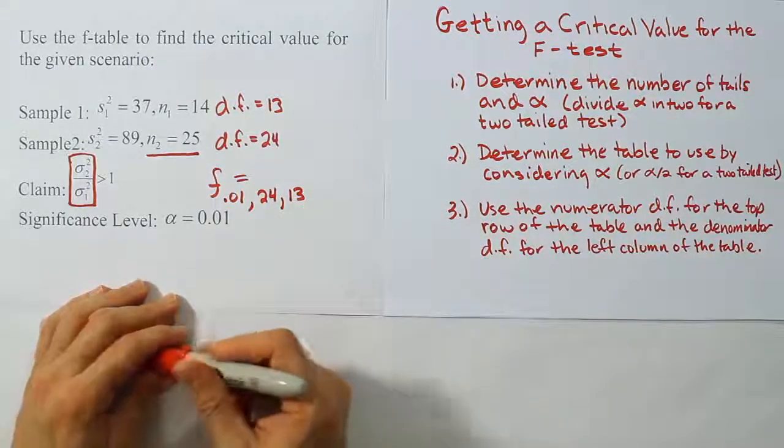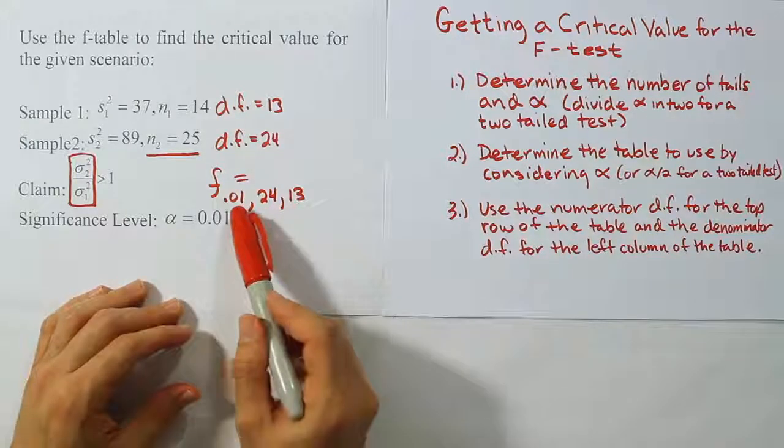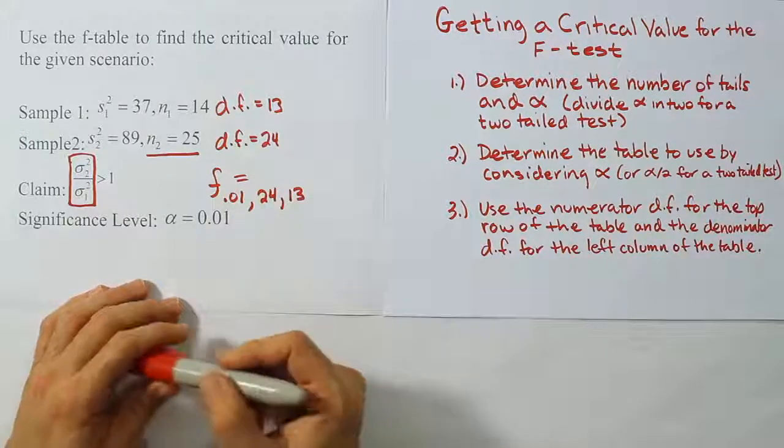Okay, so let's go look at this table for the first time and we'll go look at these numbers on the .01 table and we'll find our F value for the table.